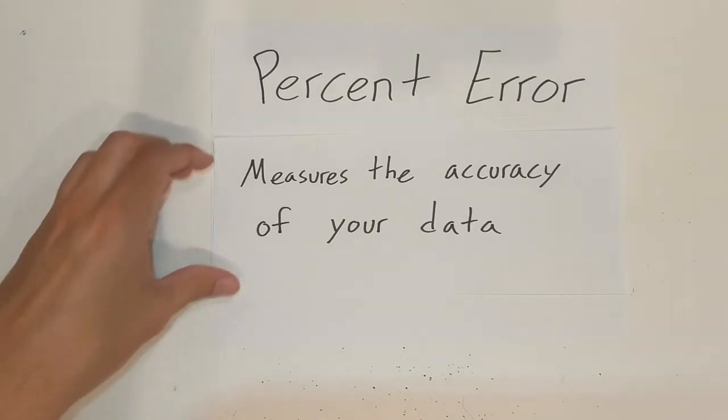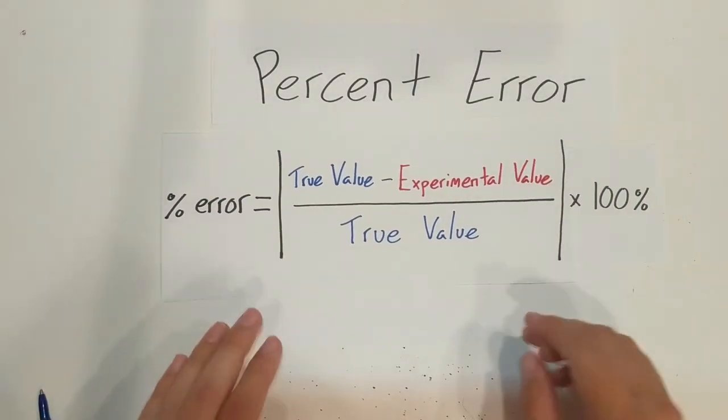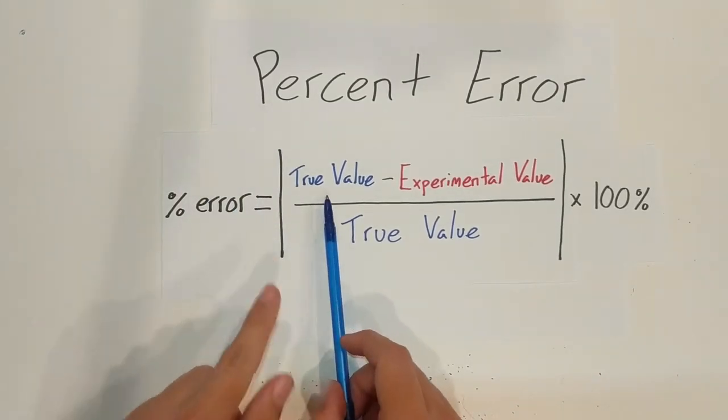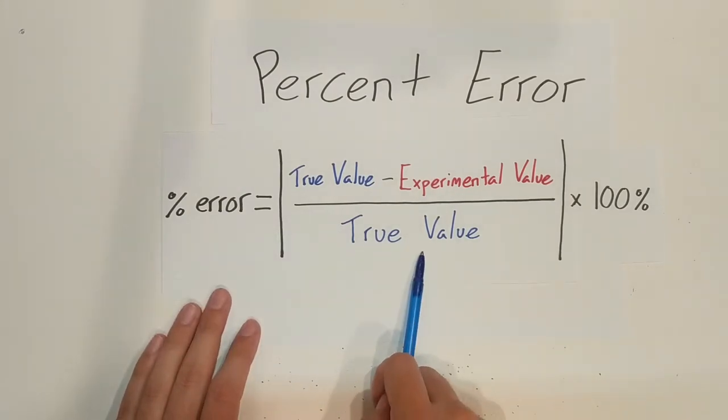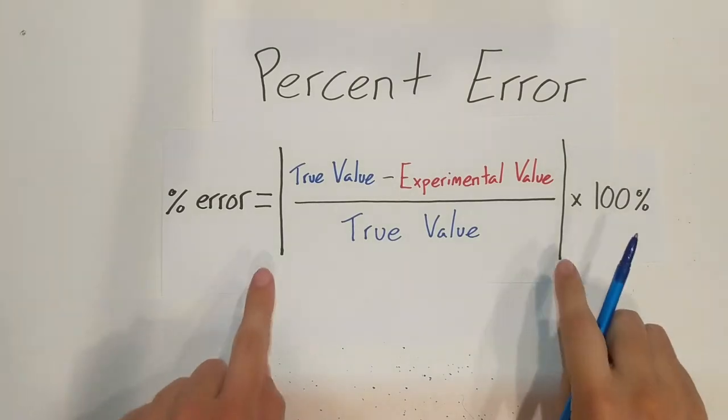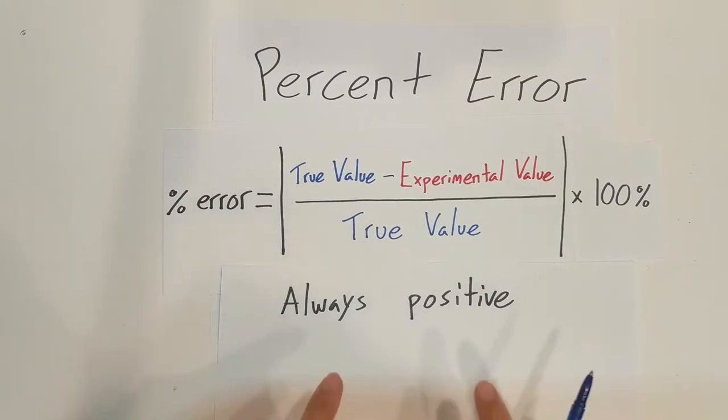The formula that we are going to use to find percent error is: our percent error is going to equal the absolute value of the true value (and the true value is what the actual value we should be getting, so you can look this up online usually) minus the experimental value (which is what we get in our experiment), all divided by the true value times 100%. One thing that is key to remember about this is that we have our absolute values right here, so our percent error is always going to be positive.